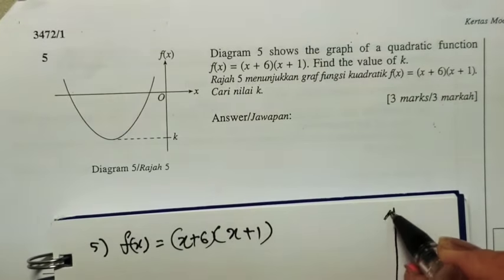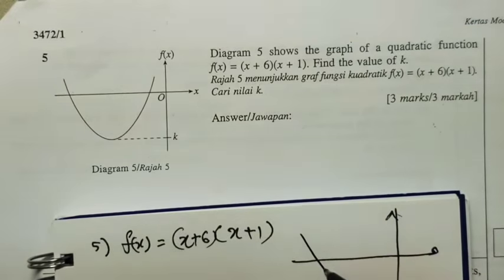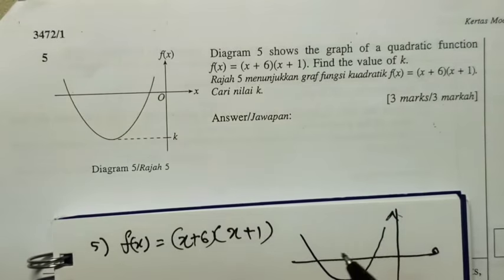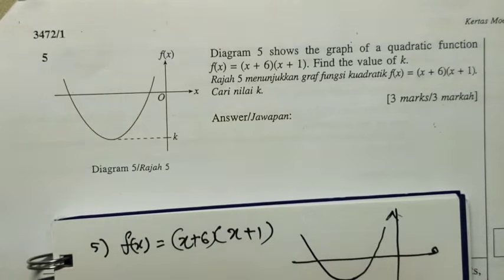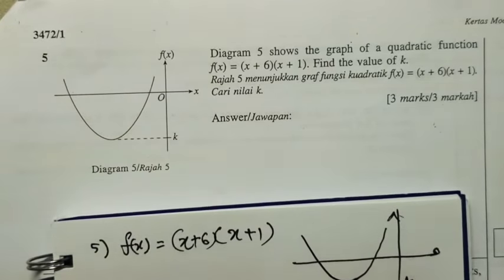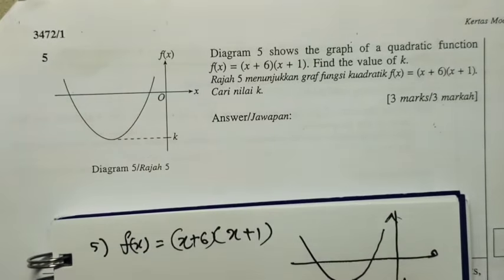So this is the graph given. Now we need to find the value of k. This is the k. How can we do this?